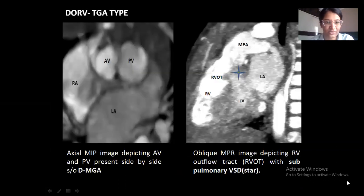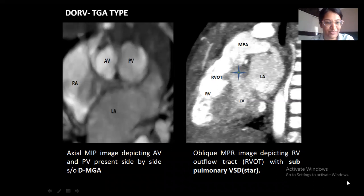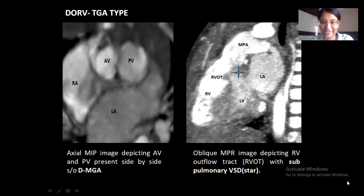Coming to the TGA type of DORV: the first image is an axial MPR image depicting the aortic and the pulmonary valves, with the aortic valve present to the right of the pulmonary valve, suggestive of D-TGA. The second image is an oblique MPR image depicting the right ventricular outflow tract with sub-pulmonary VSD depicted by the star.